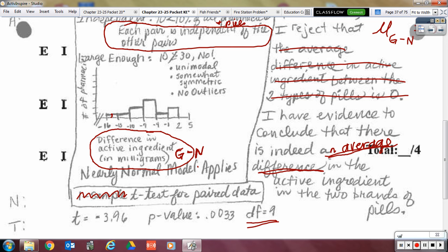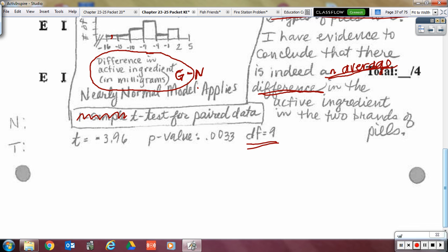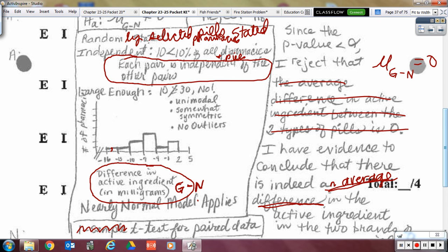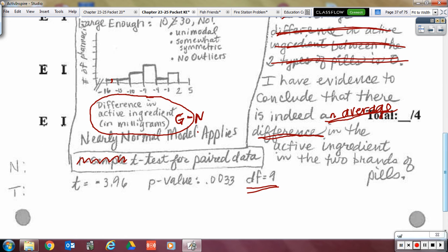So, let's check our conclusion. Since the P-value is less than alpha, I reject that the mu of G minus N is zero. And so, this was just all extra wording because I don't want to duplicate it down here. Now, I have evidence to conclude that there is the average difference in the active ingredients in the two brands of pills or two types of pills. Or you could say that the average of the generic minus is not equal to zero. Okay. All right.